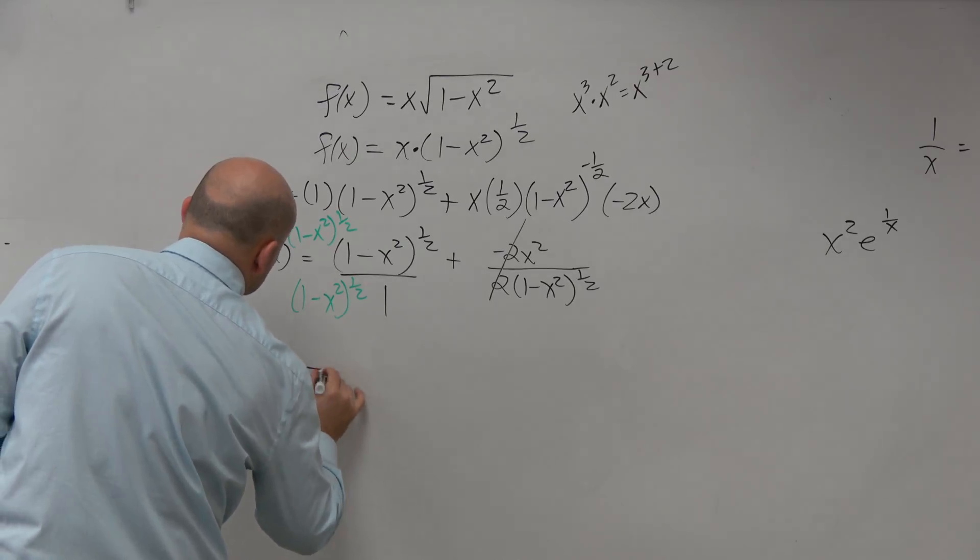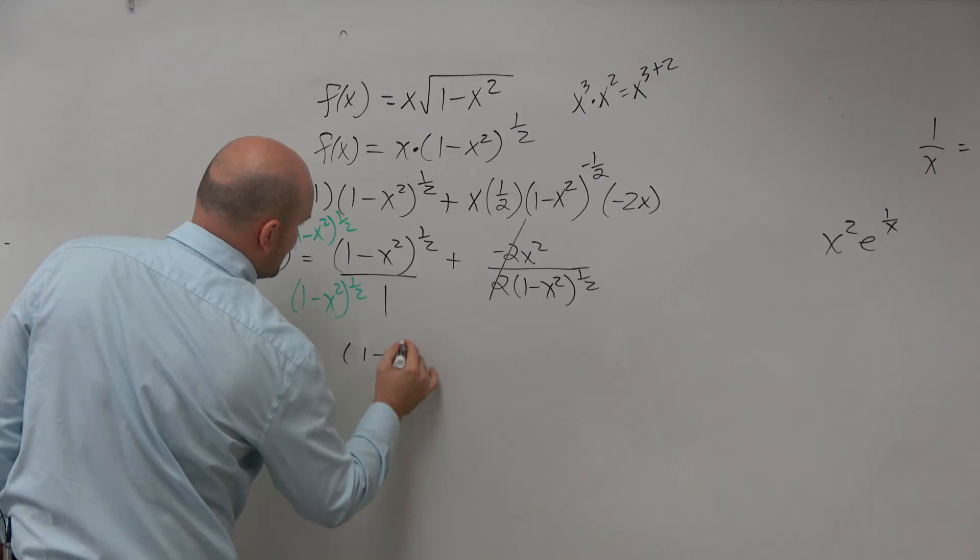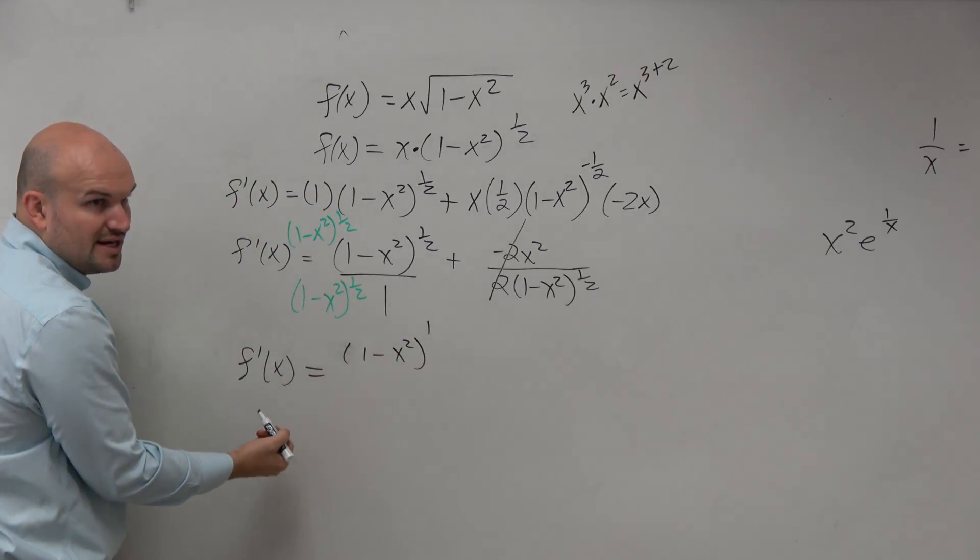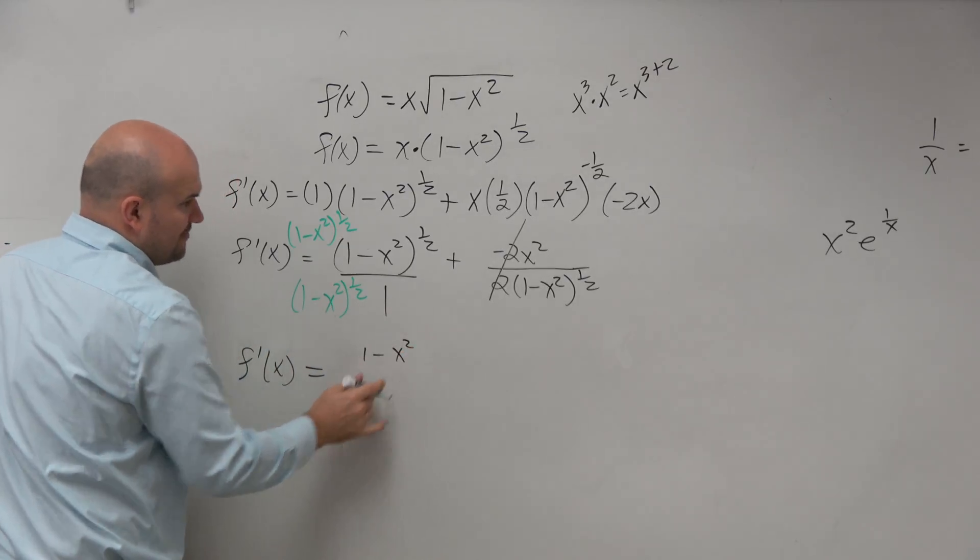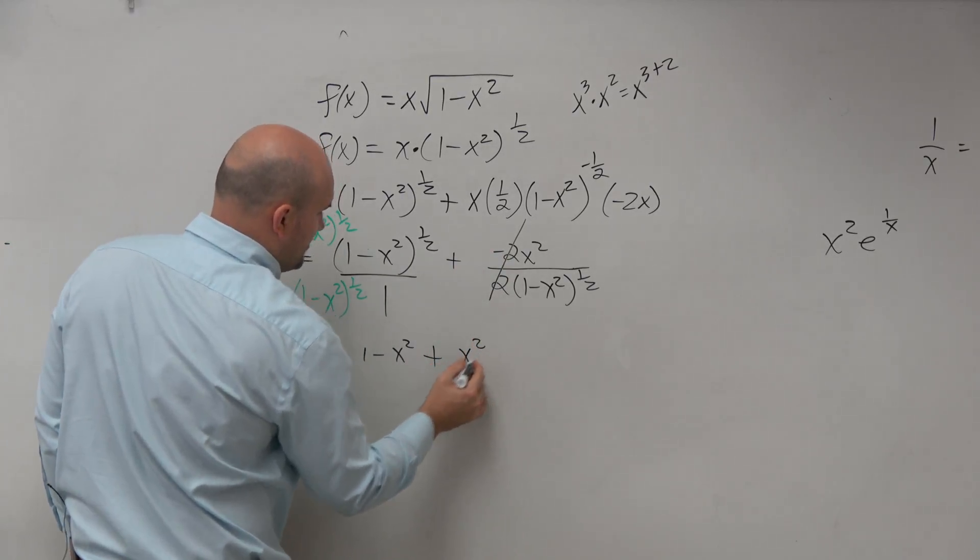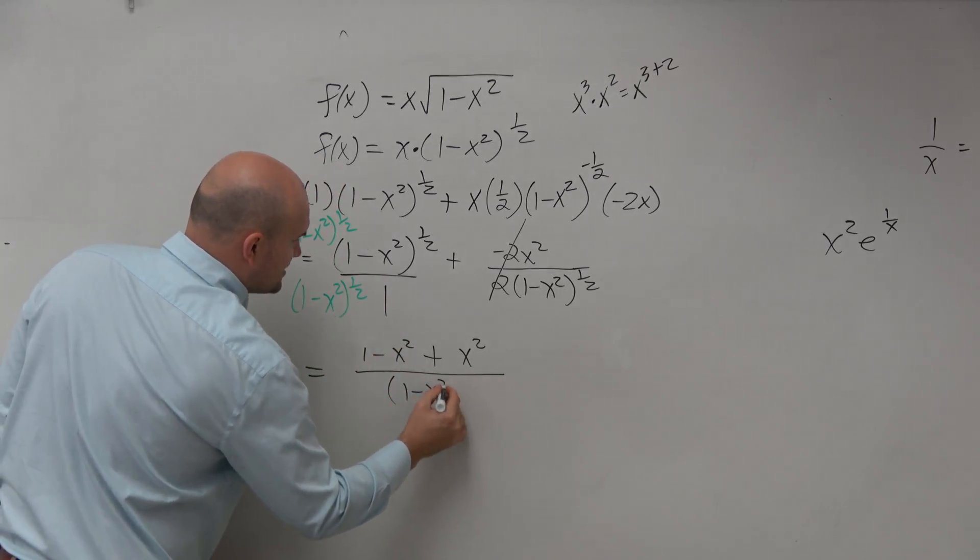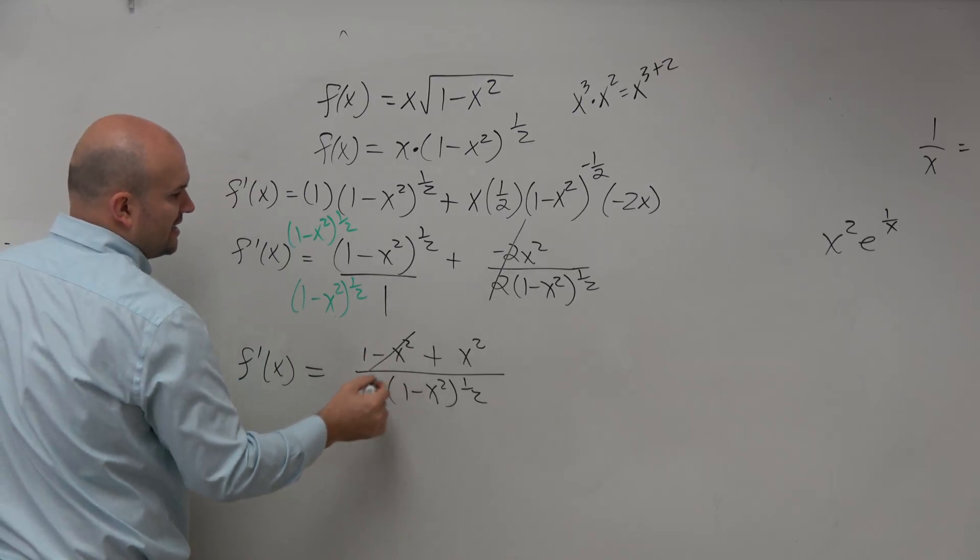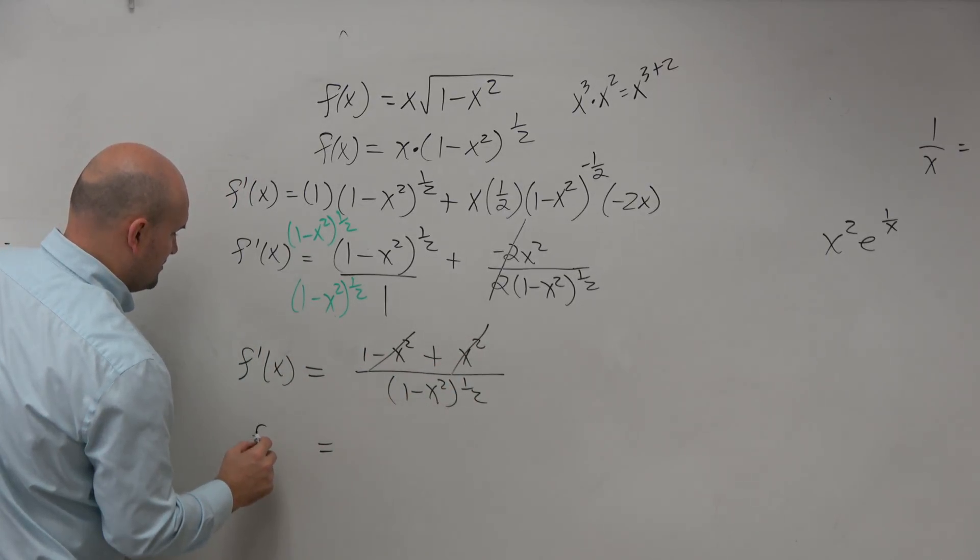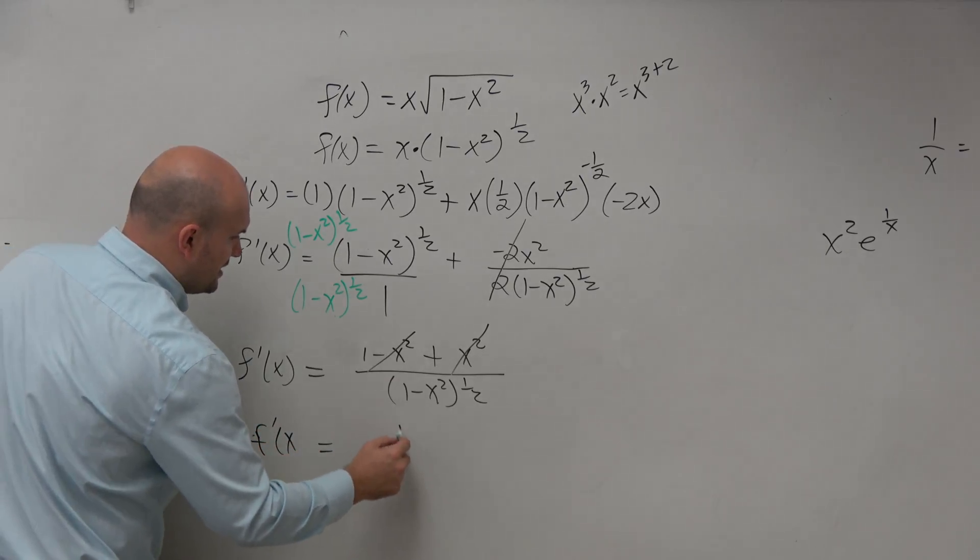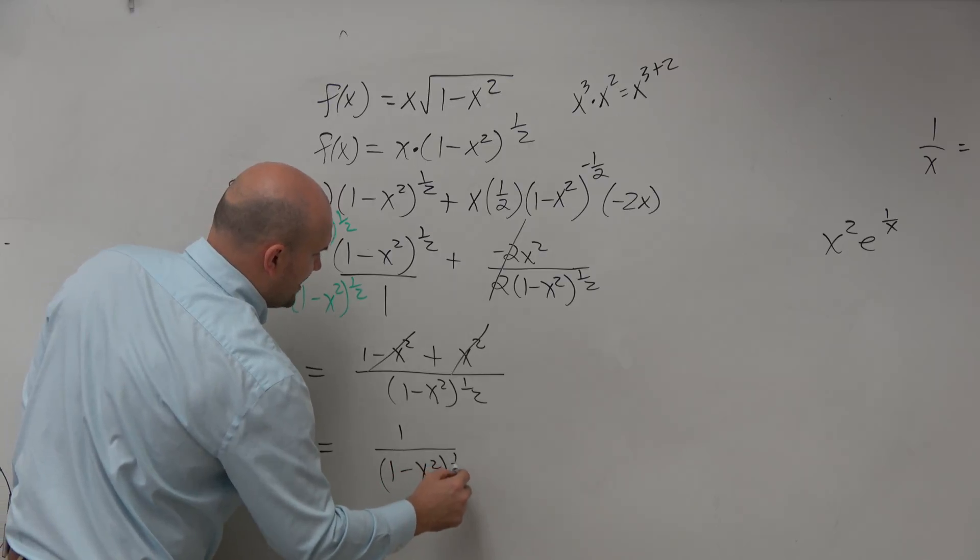So f prime of x is just equal to 1 minus x squared raised to the first power. You guys can see how that's really not needed, right? So we just erase. We don't really need all that. Plus x squared all over my common denominator, which is 1 minus x squared raised to the 1 half. Notice how the negative x squared and the positive x squared add to 0. So my final answer is 1 over 1 minus x squared raised to the 1 half.